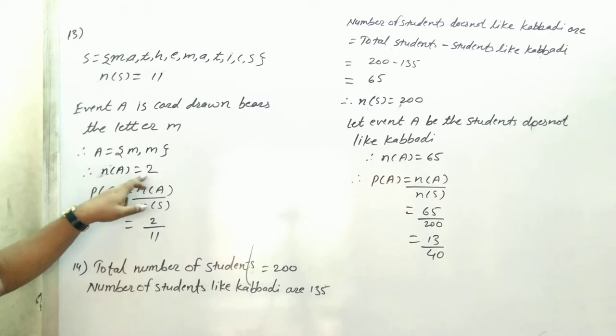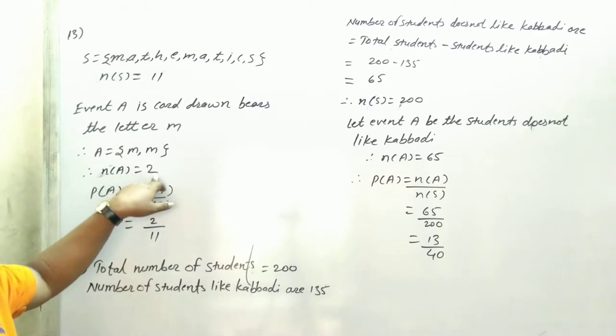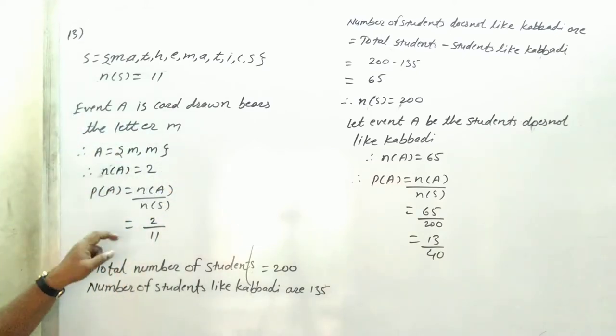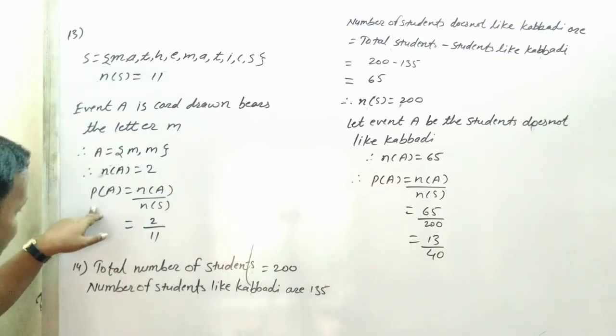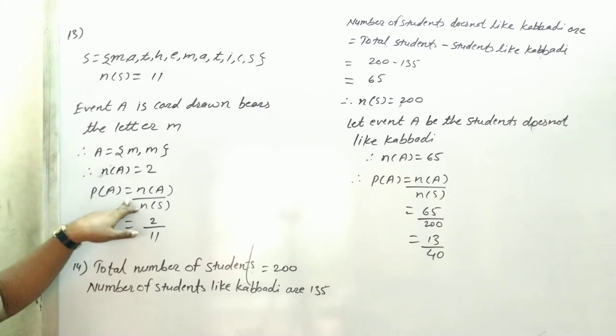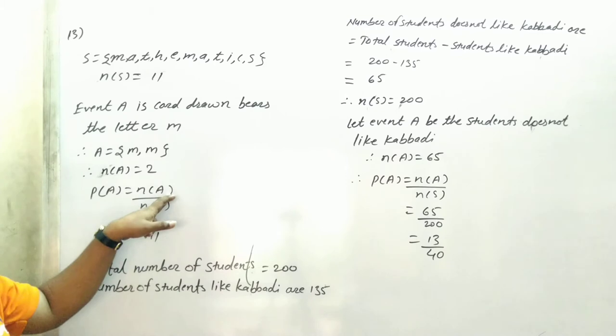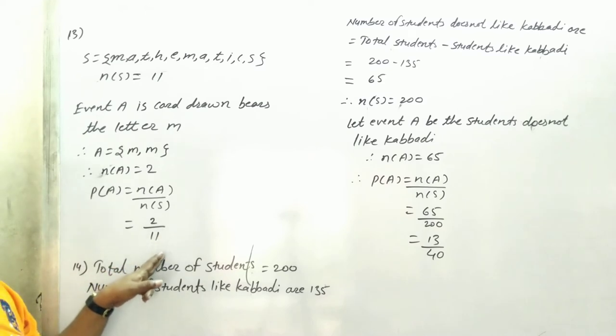So event number of A is equal to 2. Number of A, probability of A is equal to number of A upon number of S. That is 2 upon 11, 2 upon 11. Okay.